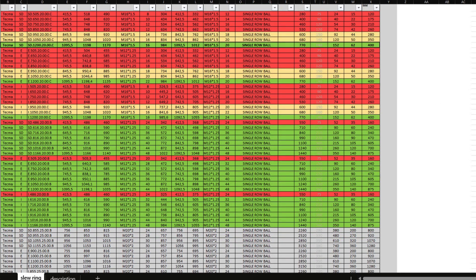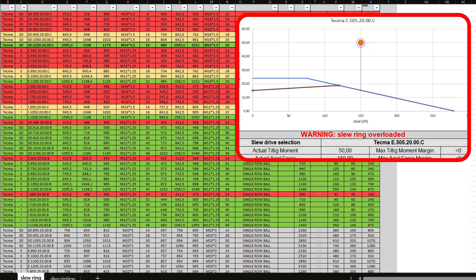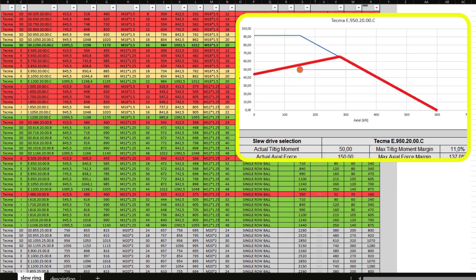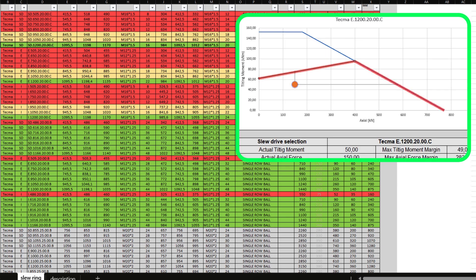What do the colors mean? Overloaded, which is red, means the load is above the limit line. Barely minimum, which is yellow. Good selection, which is highlighted green, means they are recommended for your machine.